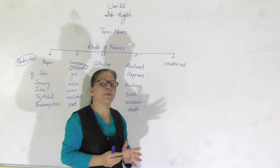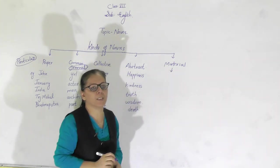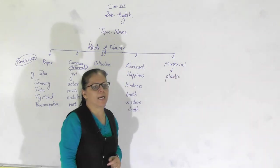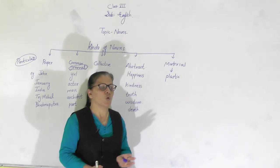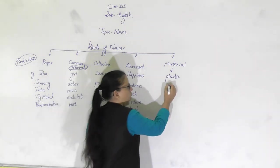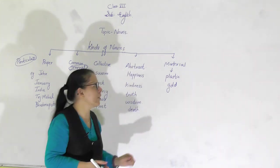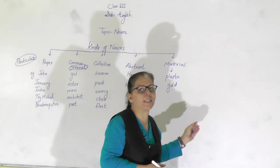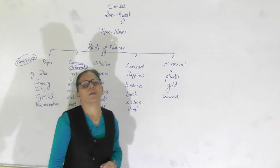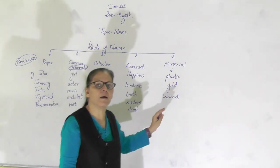Next is material noun. Material means a substance. A material noun is a noun given to a substance from which other things are made. For example, plastic — a bucket is made of plastic, so plastic is the material used to make the bucket and hence it is a material noun. Gold — the bangle is made of gold, so gold is a material noun. Wood — the table is made of wood, so wood is the material used to make it, hence wood is a material noun.